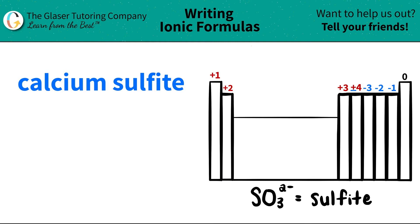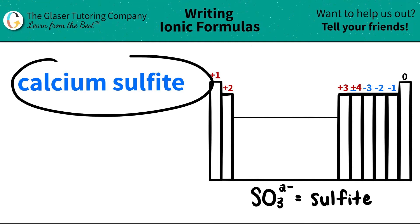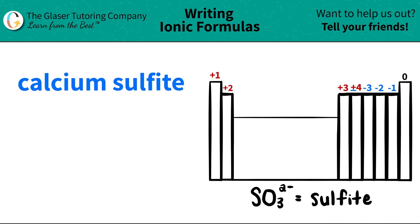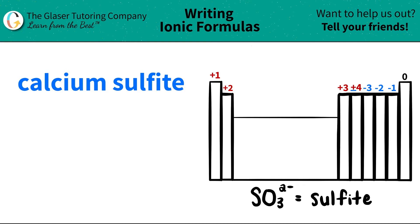Today we're going to be writing the formula for the ionic compound calcium sulfite. Let's work from left to right. Calcium is the metal, and calcium is in group two on the periodic table.